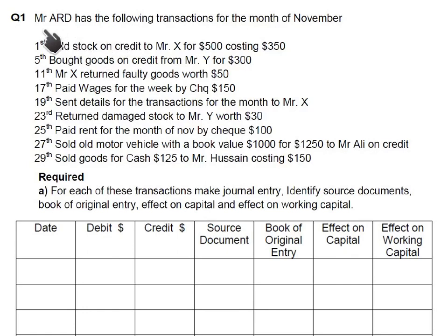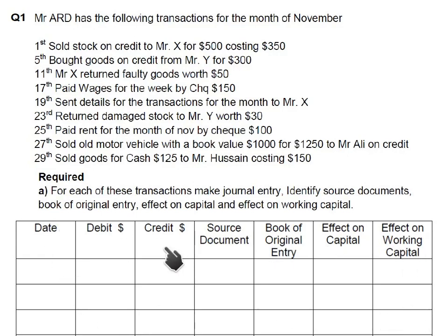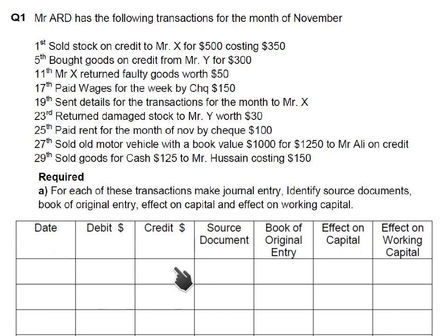Mr. ARD has the following transactions for the month of November. We need to complete this table, which is given in an examination question — just fill in the values. For each transaction we need to make a general entry, identify which account would be debited and which would be credited, and identify the source documents.